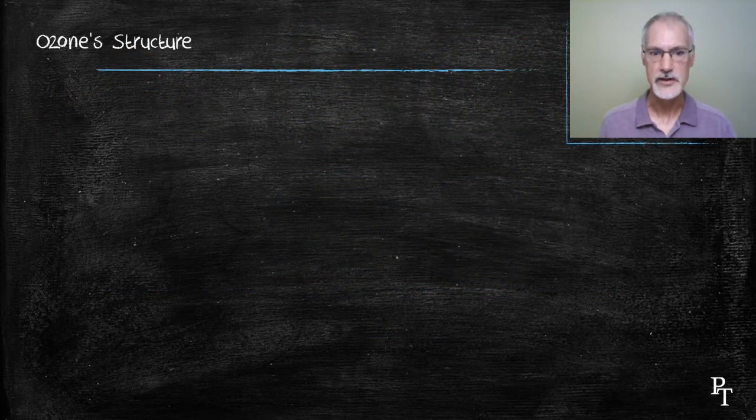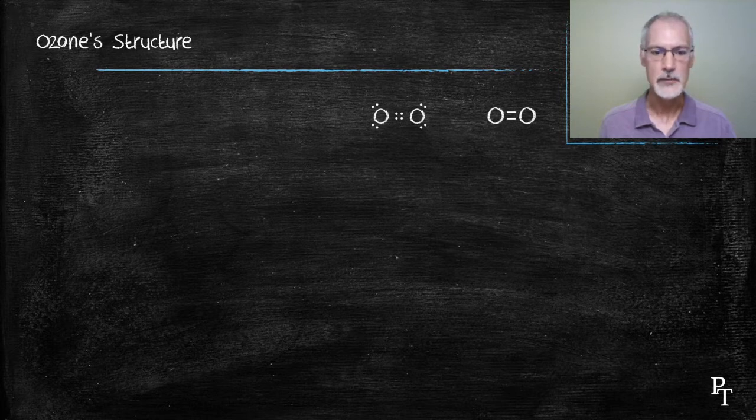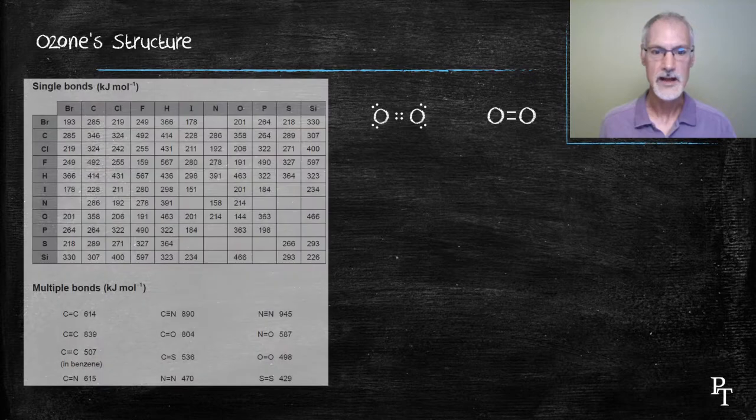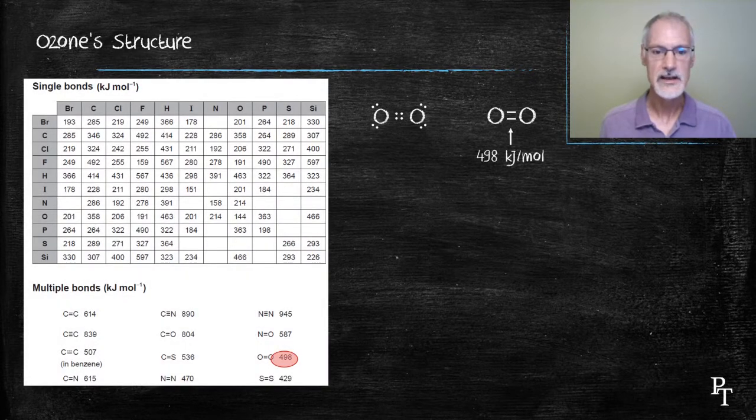First of all, let's take a look at the structure. I'm going to begin with oxygen gas, oxygen doubly bonded to another oxygen. The strength of that bond, as given in our IB data booklet, is 498 kJ per mole of bonds.